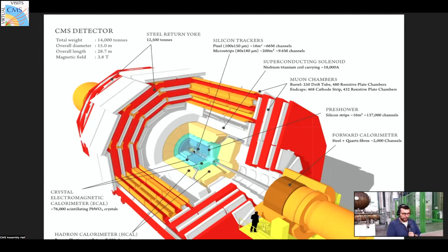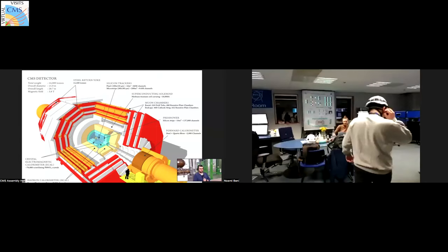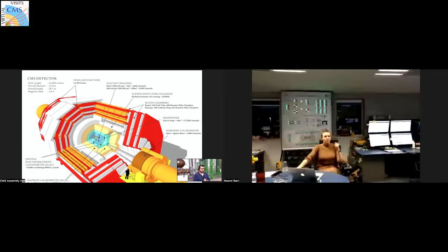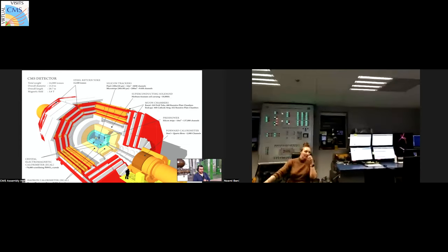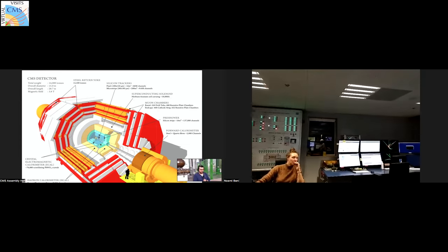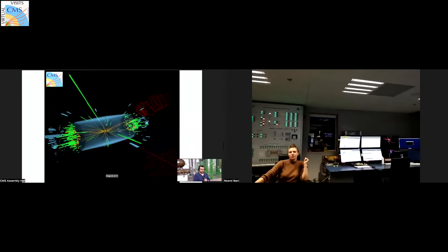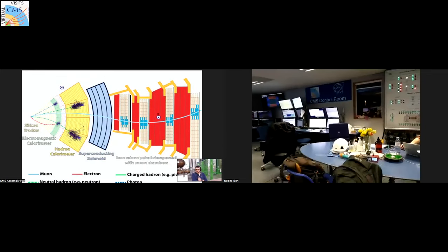The muon has a finite but long enough lifetime to traverse the entire detector. Muons produced in the upper atmosphere can travel all the way down and give a signal in the CMS detector 100 meters underground — which is also a proof of special relativity, because without time dilation their lifetime wouldn't be sufficient to reach the surface. The detector also detects cosmic rays, which we use as straight-line probes to align the exact positions of our sub-detectors.